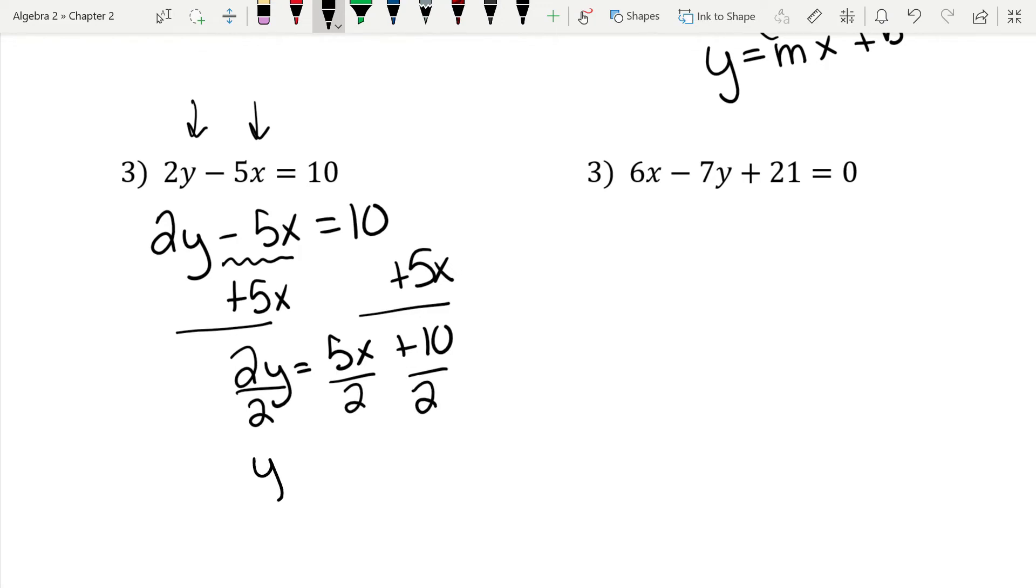And this gives us y equals 5 halves doesn't reduce. So 5 halves x. 10 divided by 2 is 5. So when I write y equals mx plus b right underneath it, m is 5 halves and b is 5.